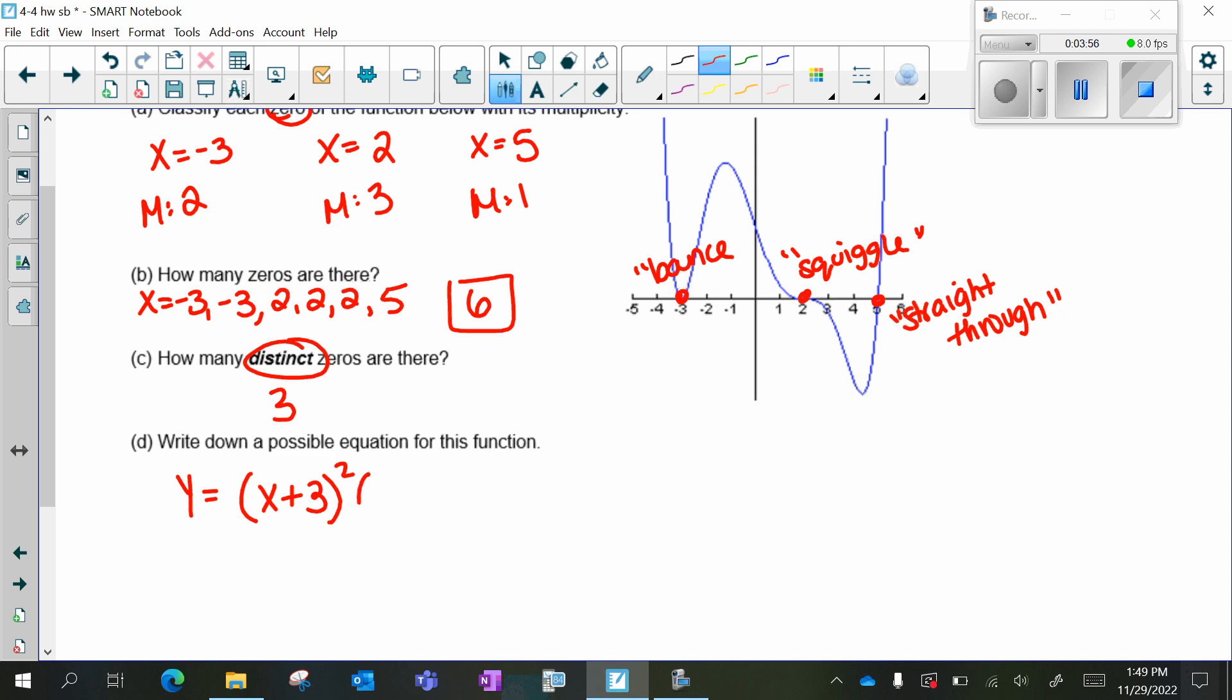x = 2 becomes (x - 2). It has a multiplicity of three, so it has an exponent of three. And lastly, x = 5 becomes (x - 5) with a multiplicity of one or an exponent of one.